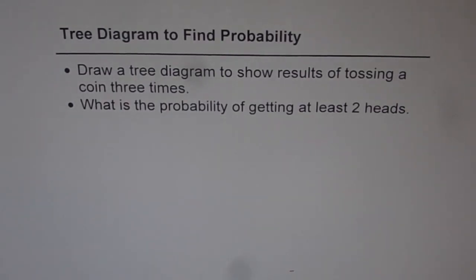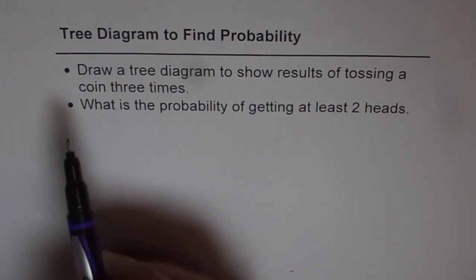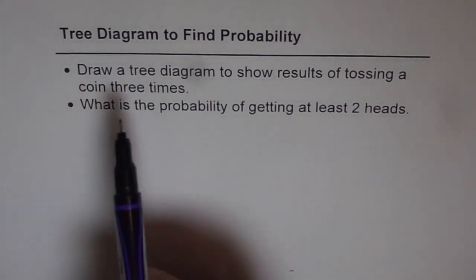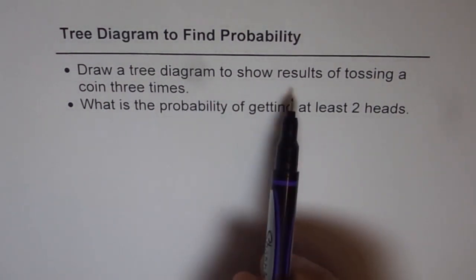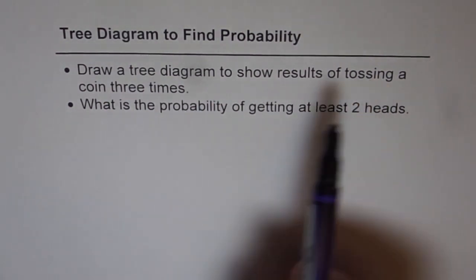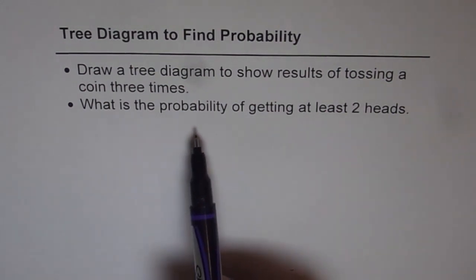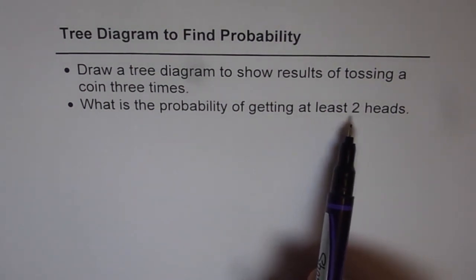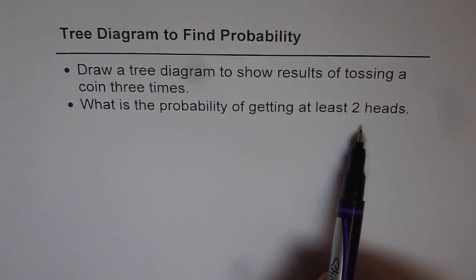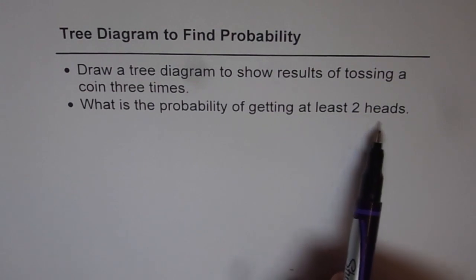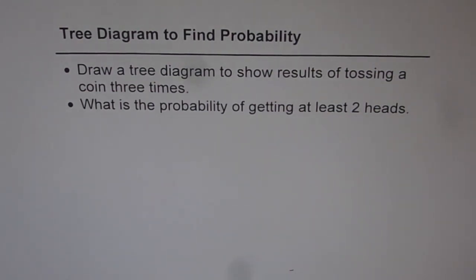Let us now try to understand how to find probability using a tree diagram. The question here is: draw a tree diagram to show results of tossing a coin three times. What is the probability of getting at least two heads? That means two or more — that is the meaning of at least two heads.